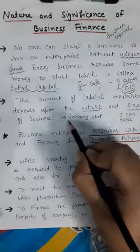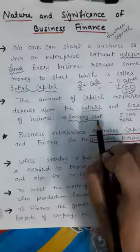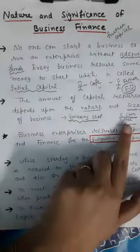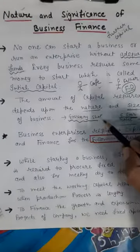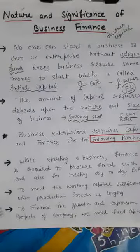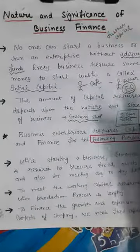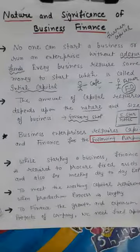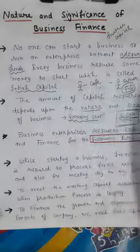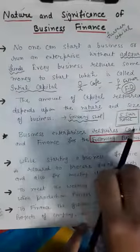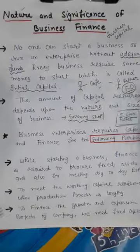Suppose there are two persons — one wants to start a grocery shop and another wants to start a five-star restaurant. Which of these two persons will need the most money? Obviously the one who wants to start the five-star restaurant, because in a restaurant you have to produce food too, there's processing involved, and then it has to be sold. A grocery shop is simple trading — buy and sell. So in this example, nature is also included: one is trading and the other is manufacturing. Size is also included: the five-star restaurant is large scale, and the grocery shop is small scale. So it depends on both your nature and your size.